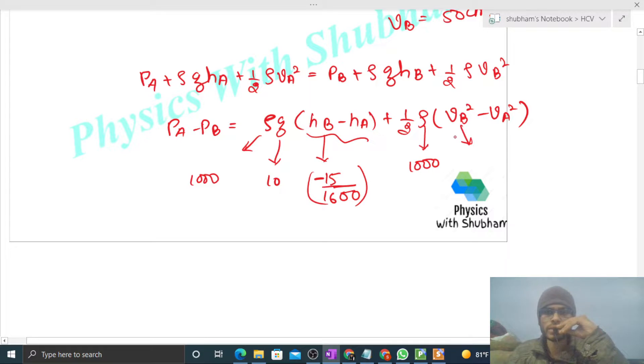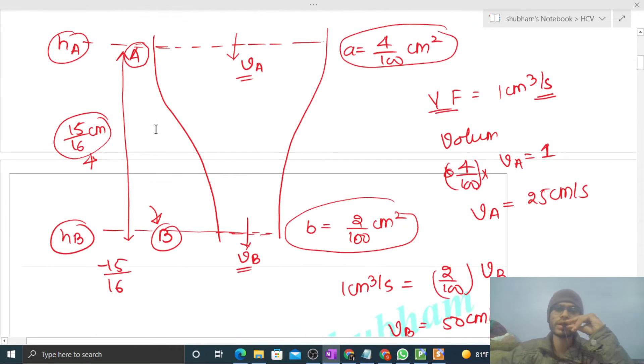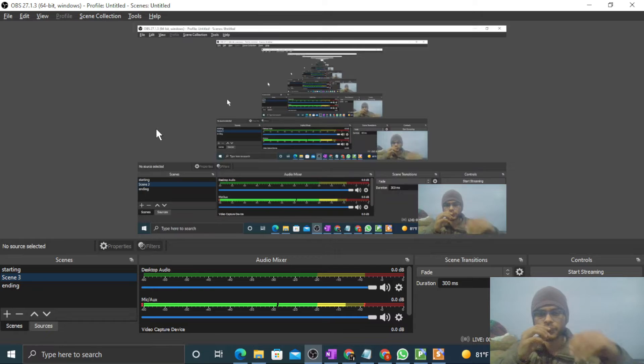vB, that is the speed of water at point B, will be half, right? 50 centimeters means half meter per second. And speed of water at point A will be 1/4. Now putting these values, you can find out the numerical answer of pressure difference. So I think you have understood. Let me know if you still have any confusion, we can discuss further. Okay, let's keep working hard. Best of luck, bye.